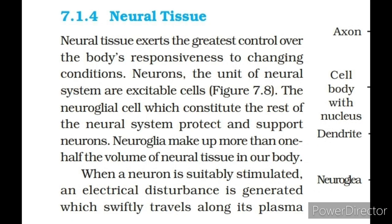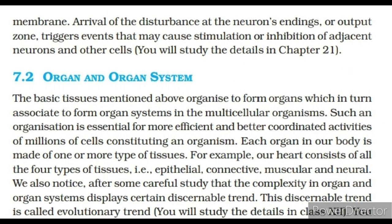Neural tissue exerts the greatest control over the body's responsiveness to changing conditions. The unit of the neural system is excitable cells called neurons. The neuroglia cells, which constitute the rest of the neural system, protect and support neurons. Neuroglia make up more than one half the volume of neural tissue in our body. When a neuron is suitably stimulated, an electrical disturbance is generated which swiftly travels along its plasma membrane. Arrival of the disturbance at the neuron's endings triggers events that may cause stimulation or inhibition of adjacent neurons and other cells.